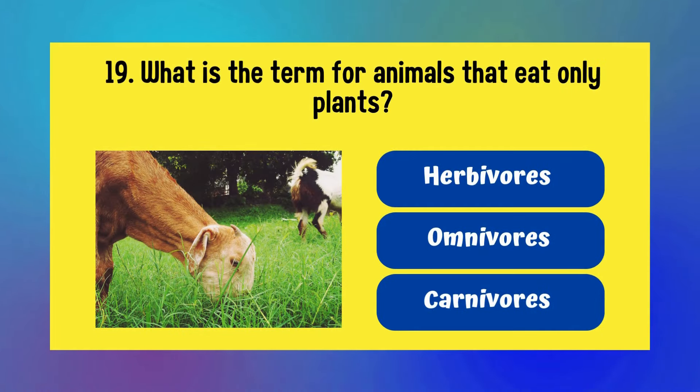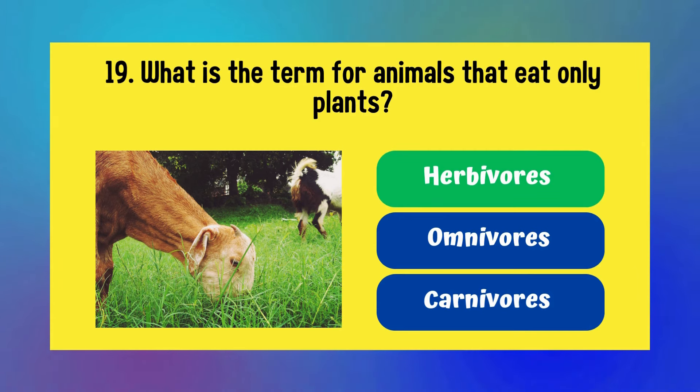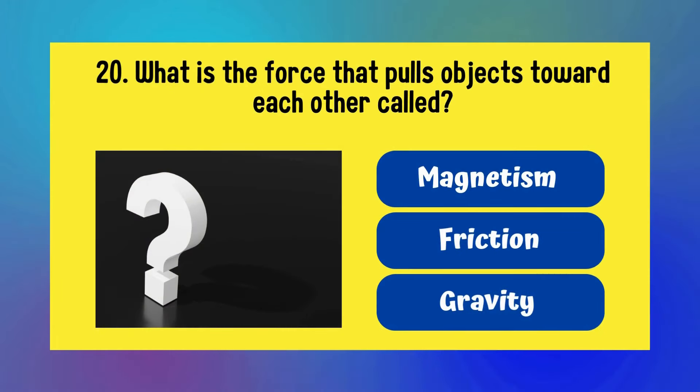What is the term for animals that eat only plants? Herbivores, omnivores, or carnivores? Answer is herbivores. What is the force that pulls objects toward each other called? Magnetism, friction, or gravity? Answer is gravity.